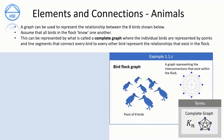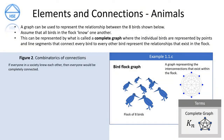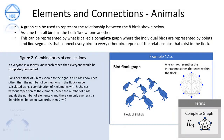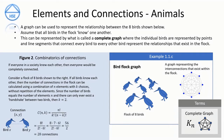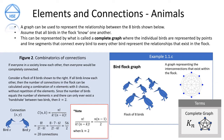In Figure 2 we explore the combinatorics of connections. If everyone in a society knew each other, everyone would be completely connected. Consider a flock of eight birds. If all birds know each other, the number of connections can be calculated using a combination of n elements with k choices without repetition. Since the number of birds equals n, and there can only ever exist a handshake between two birds, k equals 2. The result of the n-choose-k equation for eight birds is 28 connections. The n-choose-k formula can be transformed into the triangle number formula when k equals 2, so the number of connections in a complete graph can be calculated using only the number of elements.